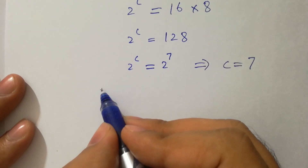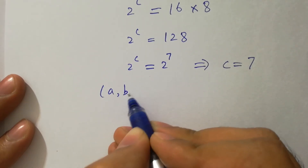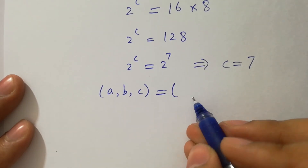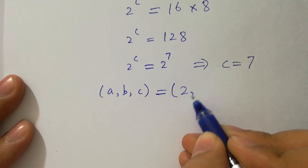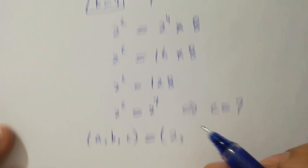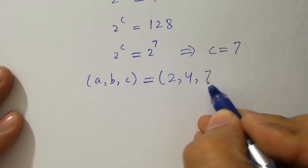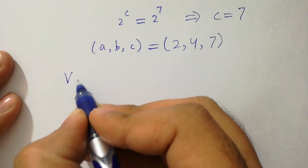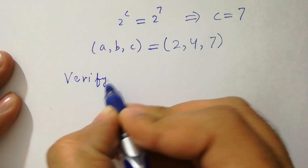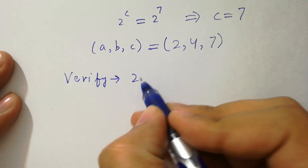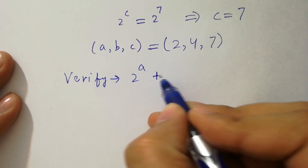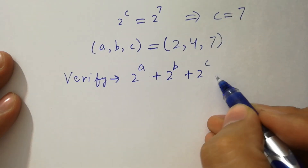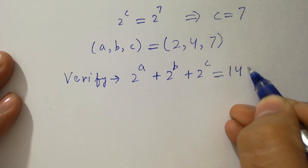So we have the values of a, b, and c: a is equal to 2, b is equal to 4, and c is equal to 7. In the next step I am going to verify: 2 to the power a plus 2 to the power b plus 2 to the power c equal to 148.